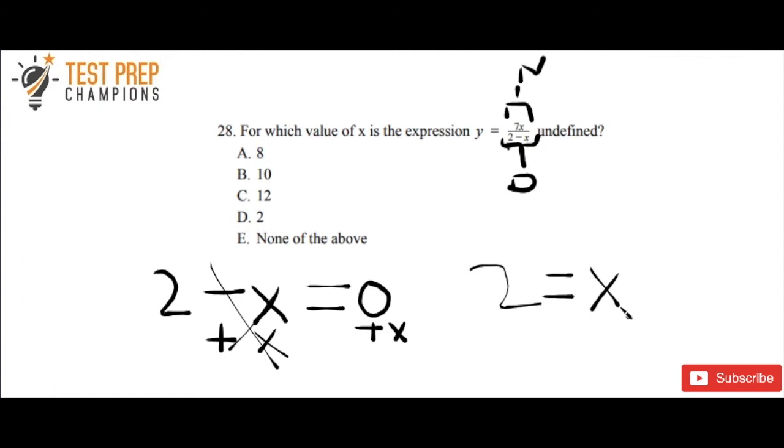And so what we've just figured out is that whenever we plug a 2 in for x, we're going to get a divide by zero error. Okay, so let me show you what I mean here.